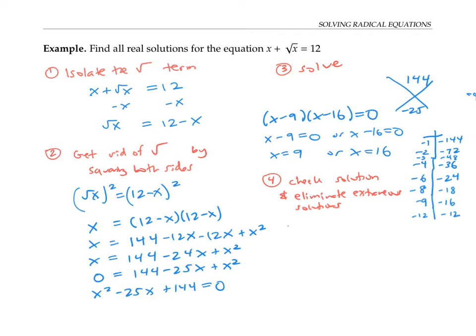Let's check x equals 9. Plugging into the original equation: 9 plus the square root of 9, and we want that to equal 12. The square root of 9 is 3, and 9 plus 3 does indeed equal 12. So that solution checks out.